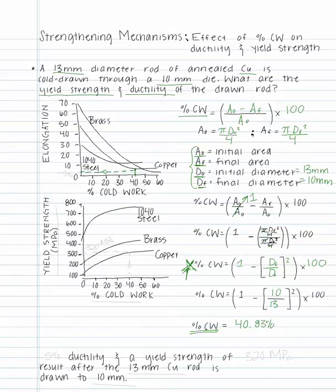Using the same process for the percent cold work in yield strength plot, we can see that approximately 41% corresponds to nearly 320 megapascals.